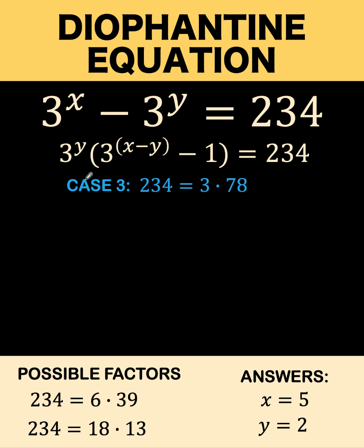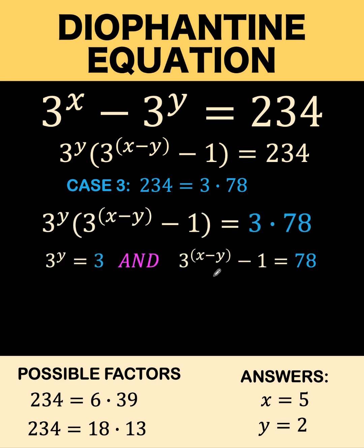Then let's go to case number 3. So 3 raised to y equals 3, and the second factor here equals this 78. Then from here, 3 raised to y equals 1. That means y must be equal to 1. And we can substitute now this value of y of 1 here to get x minus 1 as the exponent. Then adding 1 to both sides, we have 79 at the right side.